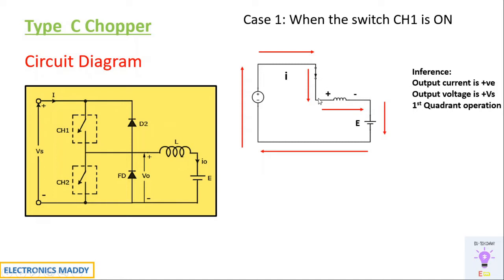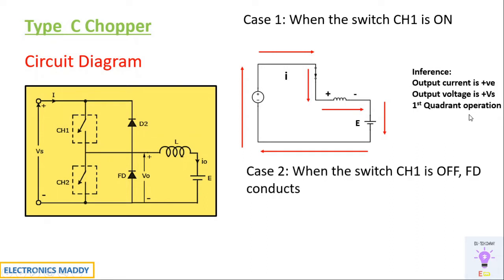Current starts flowing in this direction, the inductor starts charging with polarity plus and minus, and consequently it comes back to the DC source. The output current is positive — current is flowing from the source to the load. Output voltage is plus Vs, as whatever is supplied is appearing across the load terminals. This corresponds to first quadrant operation because both current and voltage are positive.